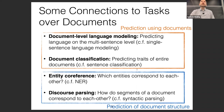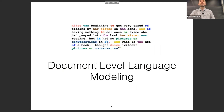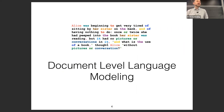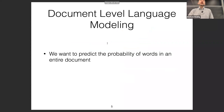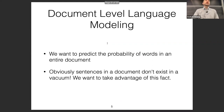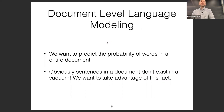The top category could be characterized as prediction using documents, and the bottom part as prediction of document structure. For document-level language modeling — or more accurately, language modeling over long sequences — we want to predict the probability of words in an entire document. Sentences in a document don't exist in a vacuum; each sentence follows the previous one.